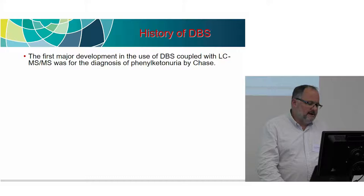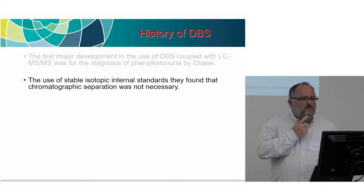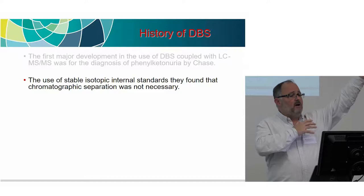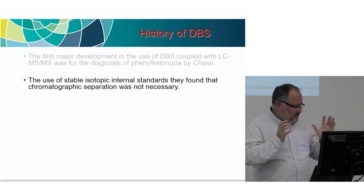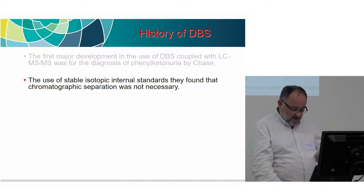We also had the development of stable isotope internal standards, and from a newborn screening perspective they found that, to a degree, they didn't really need much chromatographic separation. Because in newborn screening we are screening — precision won't be quite as tight; we may be 15 or 20%, but we're looking at very high, very low, or normal. And if we want to push through 500 or 600 samples per night to get results out next morning for doctors to act, every minute helps.